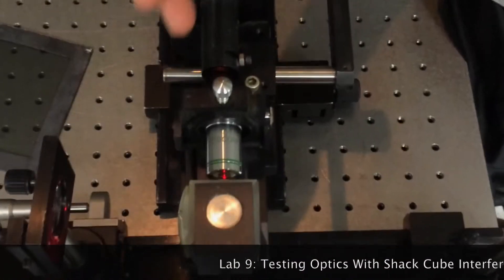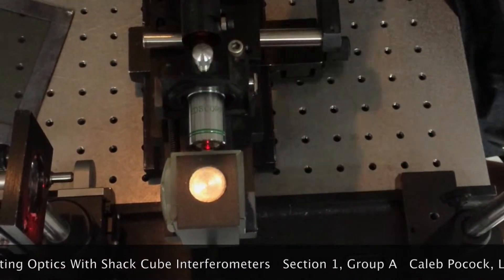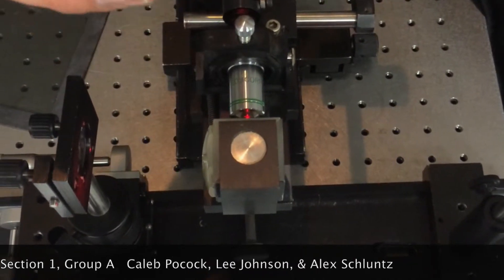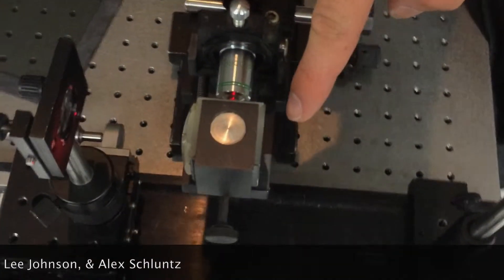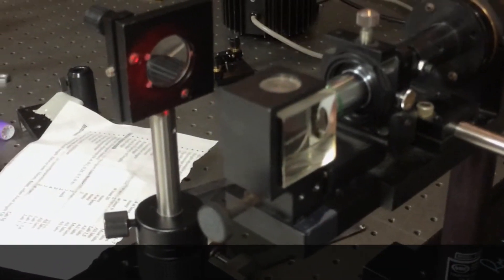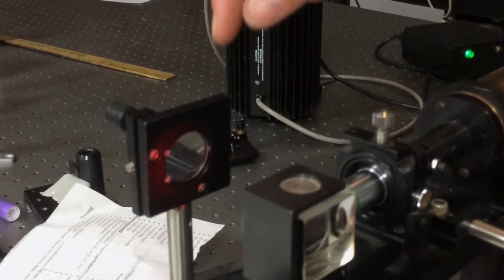So here we have a laser that is cleaned up by going through a spatial filter, and then it goes to the Shack cube interferometer, which is a beam splitter that reflects the light this way, and then the curved surface reflects approximately 4% back, and it comes to a focus right outside the Shack cube interferometer. Then the rest of the light that gets transmitted will be reflected off of the surfaces that we are testing.